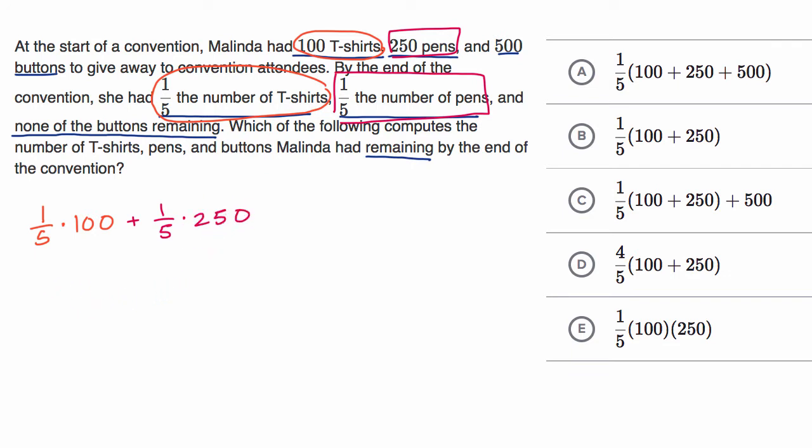And then how many buttons? Well, they tell us that she is left with none of the buttons remaining. So zero buttons. Or we don't even have to write that. We could just write it like this. Because if you add zero, it obviously doesn't change the quantity.